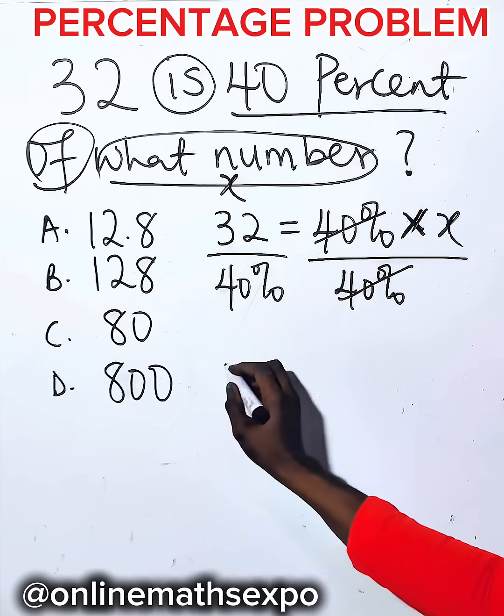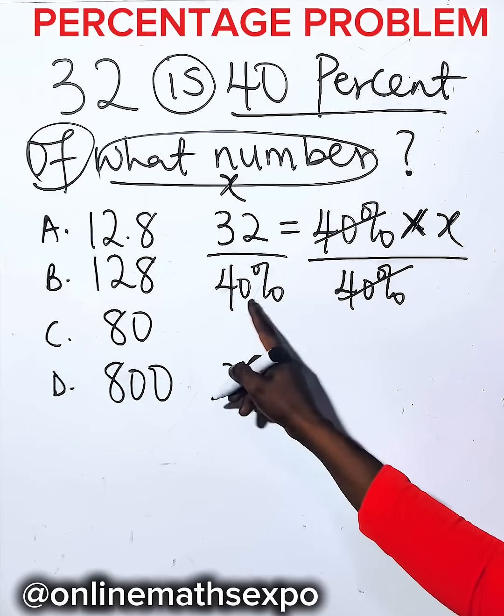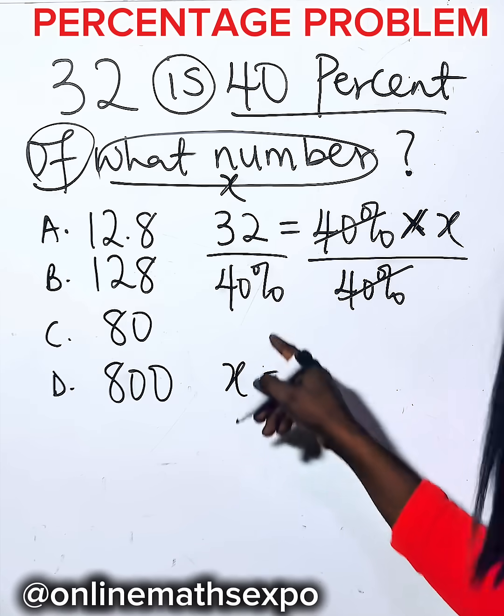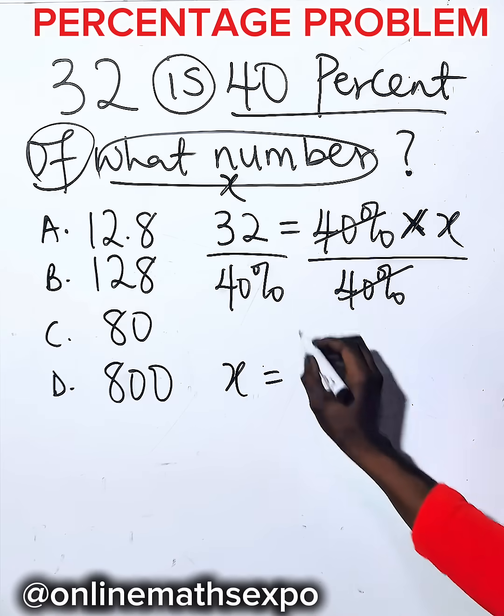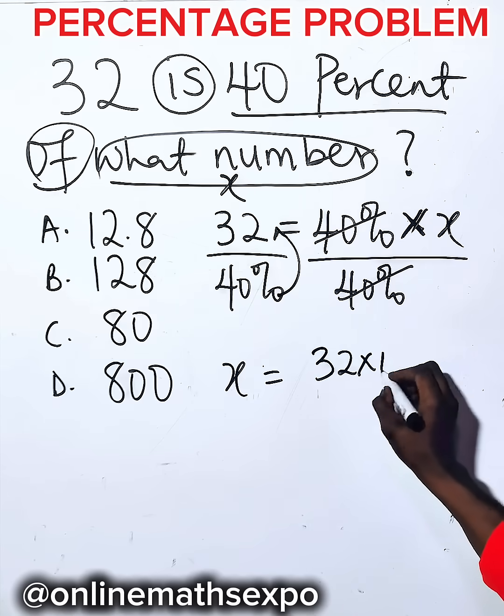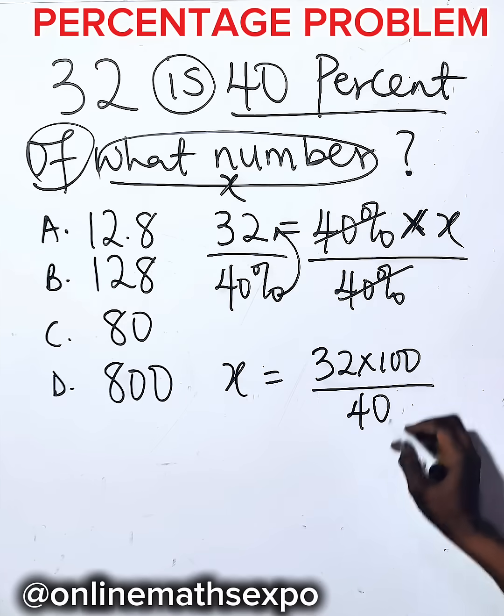So x will be, when you divide this by 40, remember 40 percent is a fraction, 40 out of 100. So you need to reverse it so that you use this 100 to multiply the numerator. So we have 32 multiplied by 100, then divide by 40.